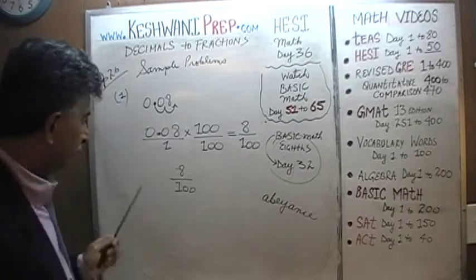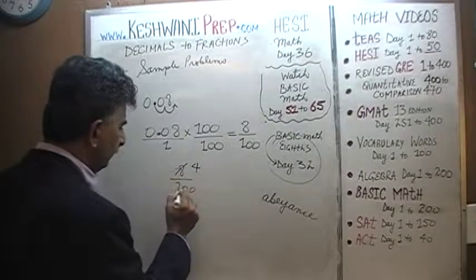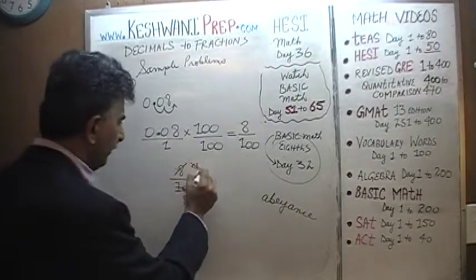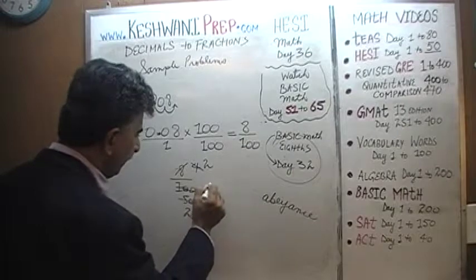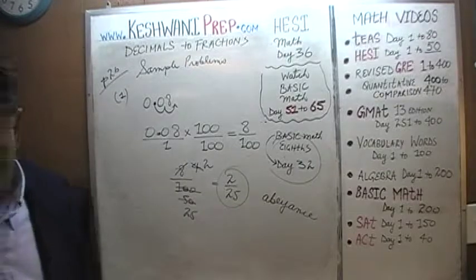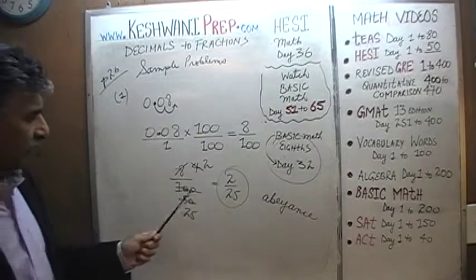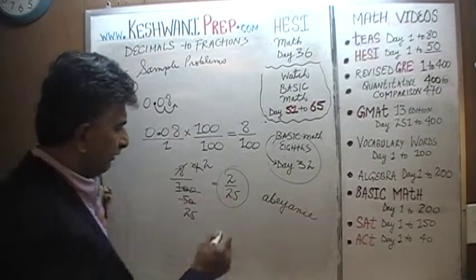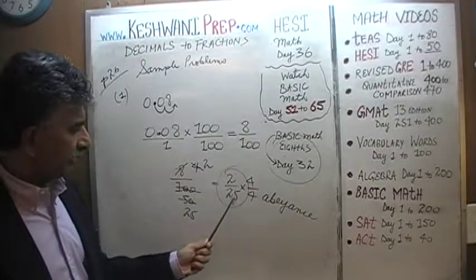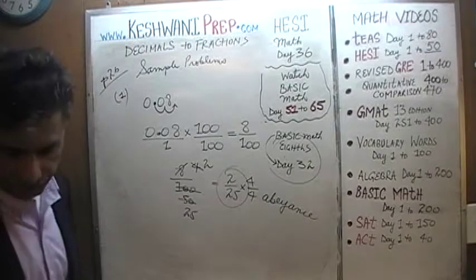Let's divide by 2 first: 8 divided by 2 is 4, and 100 divided by 2 is 50. Divide one more time by 2: that becomes 2 and that becomes 25. So 2 over 25 is the answer. Which makes perfect sense — if you multiply top and bottom of 2/25 by 4, you get 8 over 100, which is clearly 0.08.